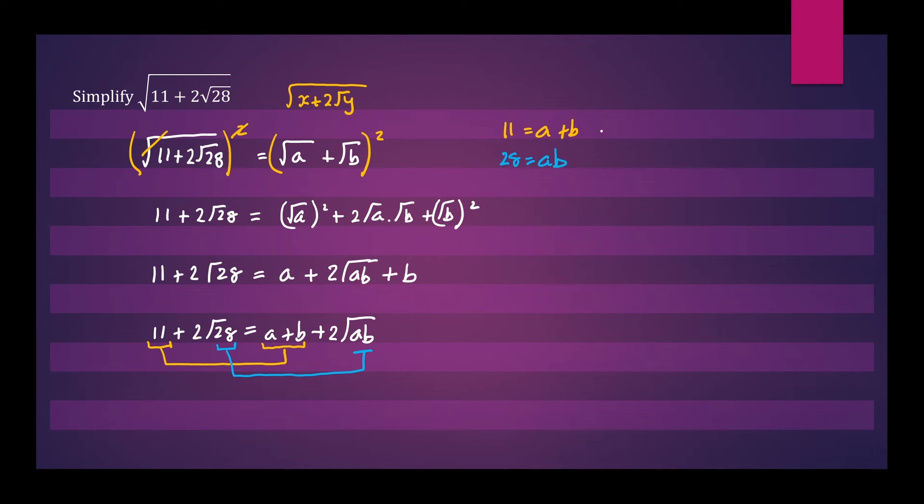So you can see that we have two simultaneous equations. We'll label them 1 and 2. But these solutions are quite easy to guess, aren't they? We have a plus b is 11 and ab is 28.